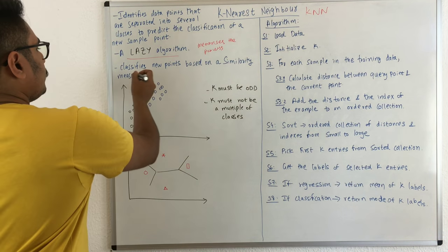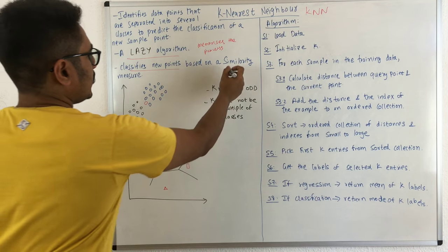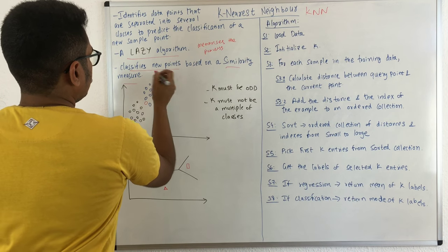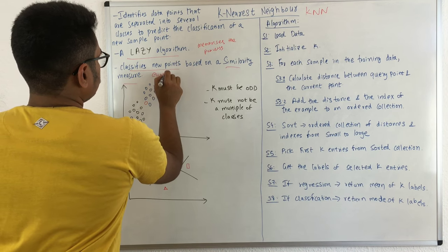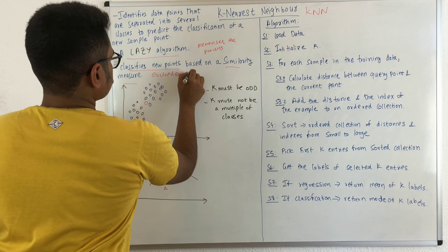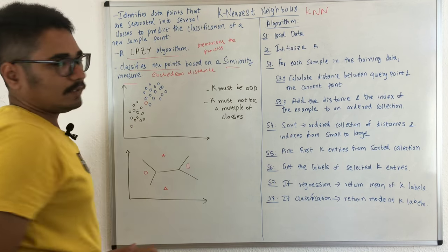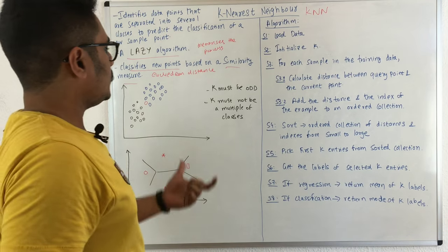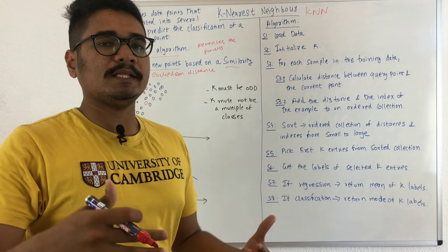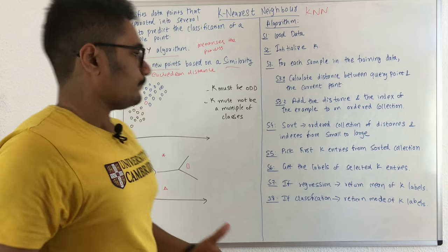KNN classifies any new points based on a similarity measure. That similarity measure can be anything — you have the Euclidean distance. It basically calculates the Euclidean distance between two points, so it's a proximity measure, and then it tries to identify who all are its neighbors.